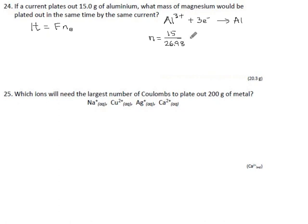We know that our number of moles of aluminum would be its mass, 15, divided by the molar mass for aluminum, which is 26.98. 15 divided by 26.98, we get 0.55597 moles of aluminum. According to our reaction, however much aluminum you make, you'll need three times that many electrons.